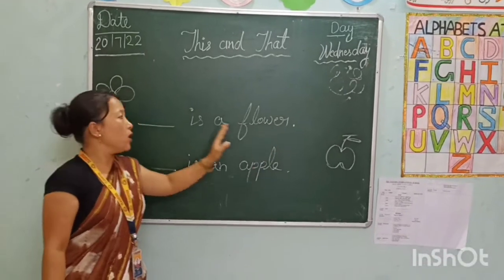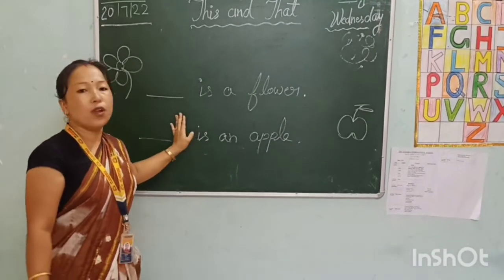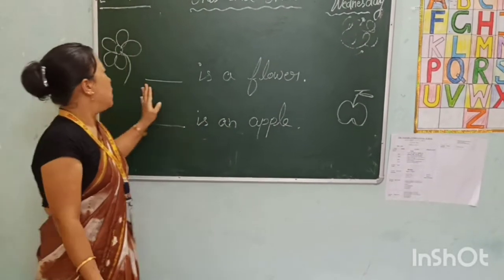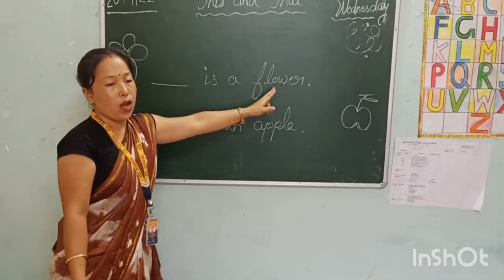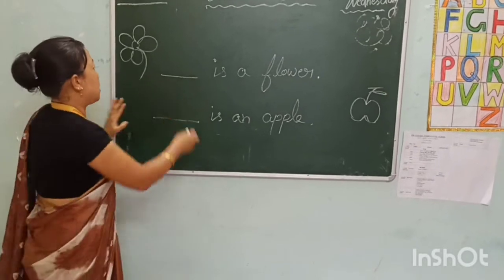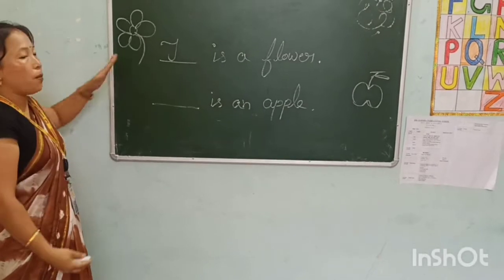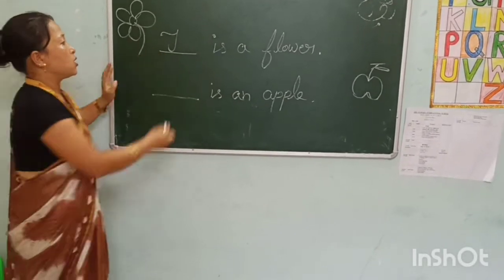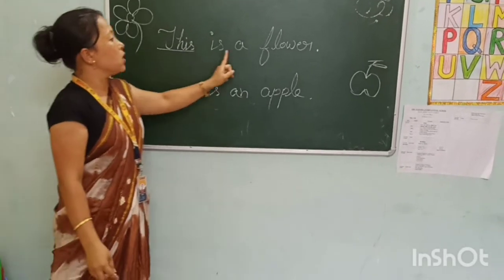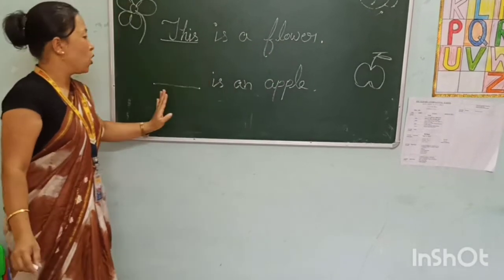Children, these are fill in the blanks. You have to fill in the blanks with this or that. Aapko blank mein this ya that fill karna hai. Dash is a flower. We use here this, because it's near for me. Yeh mere paas hai, is liye this. T-H-I-S. This is a flower. Yahan ek phul hai.